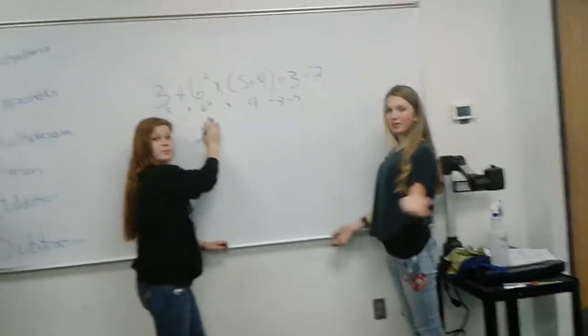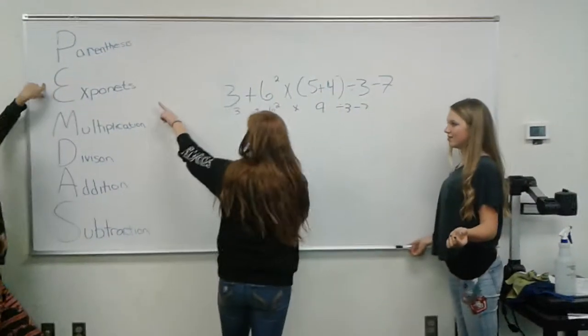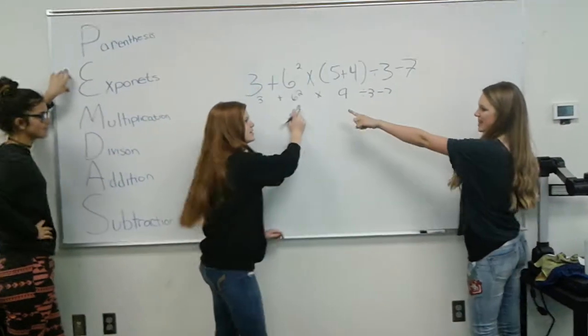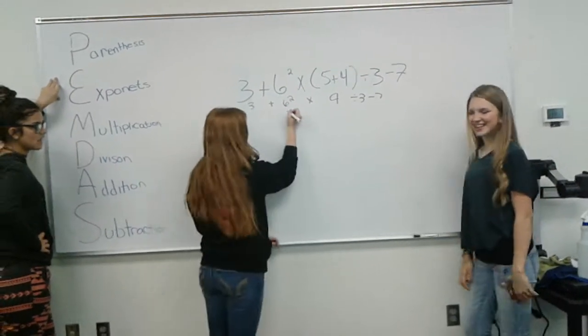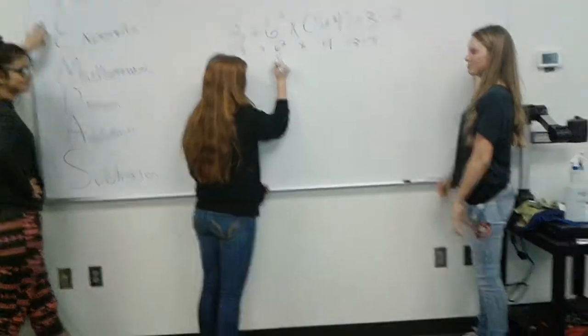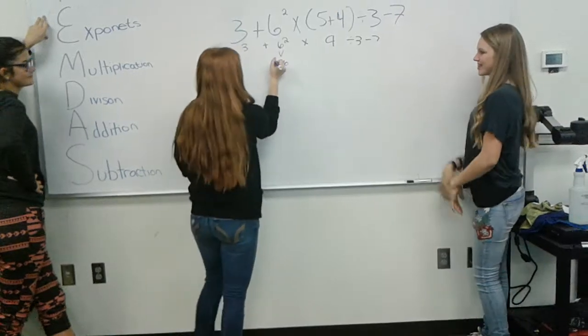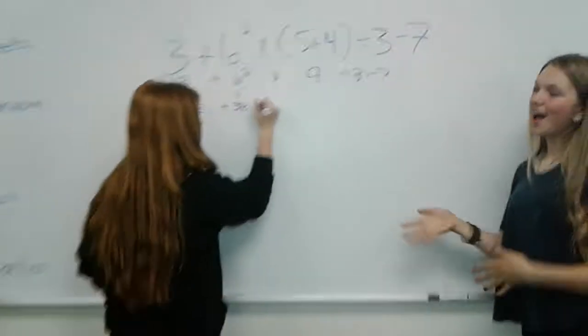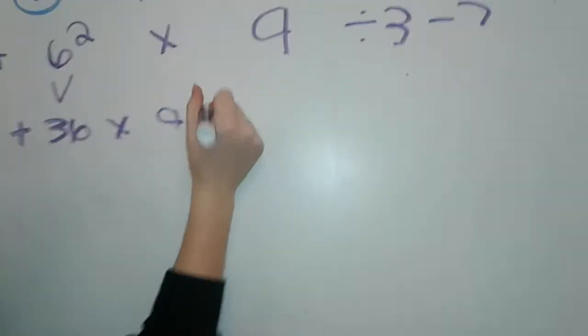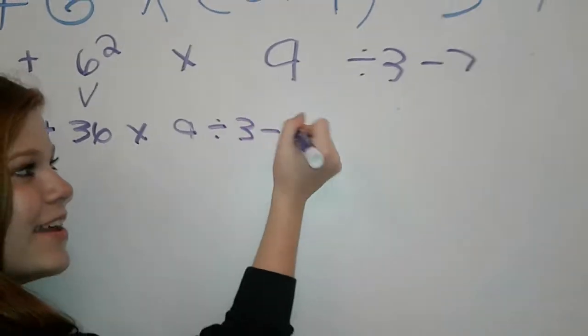The exponent. Exponents. So 6 to the second power would be 36. Bring this down. 36. Bring the rest down. Times 9, divide by 3 minus 7.